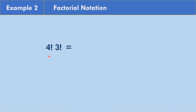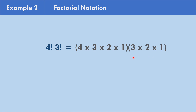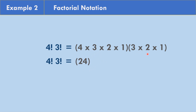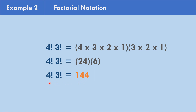How about number 2: 4 factorial times 3 factorial? When you see this, it means multiplication. So 4 factorial becomes 4 times 3 times 2 times 1, and 3 factorial is 3 times 2 times 1. Multiplying: 4 times 3 is 12, times 2 is 24, times 1 equals 24. And 3 times 2 is 6, times 1 equals 6. So 24 times 6 equals 144. Therefore 4 factorial times 3 factorial equals 144.